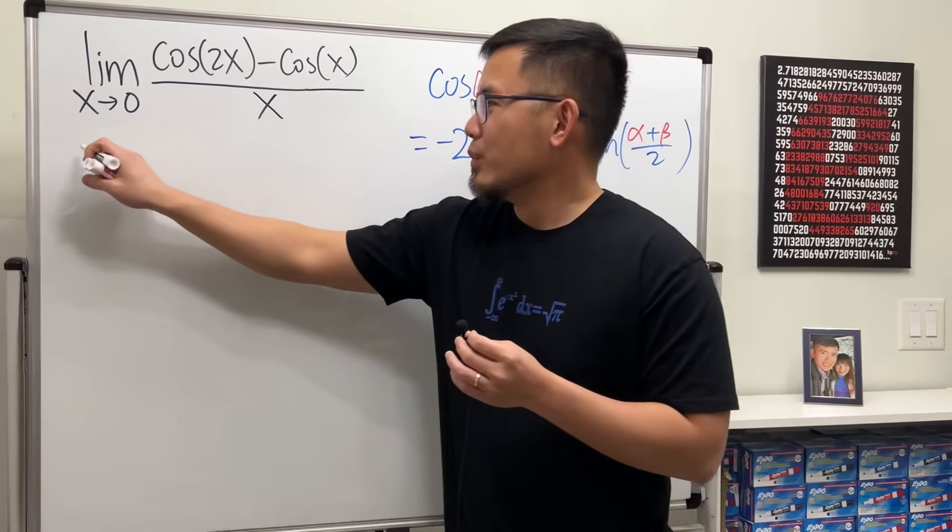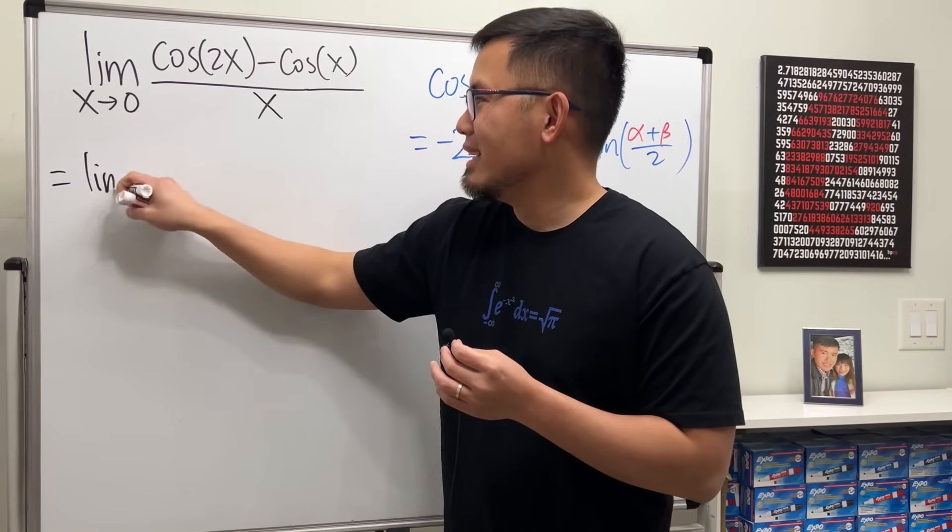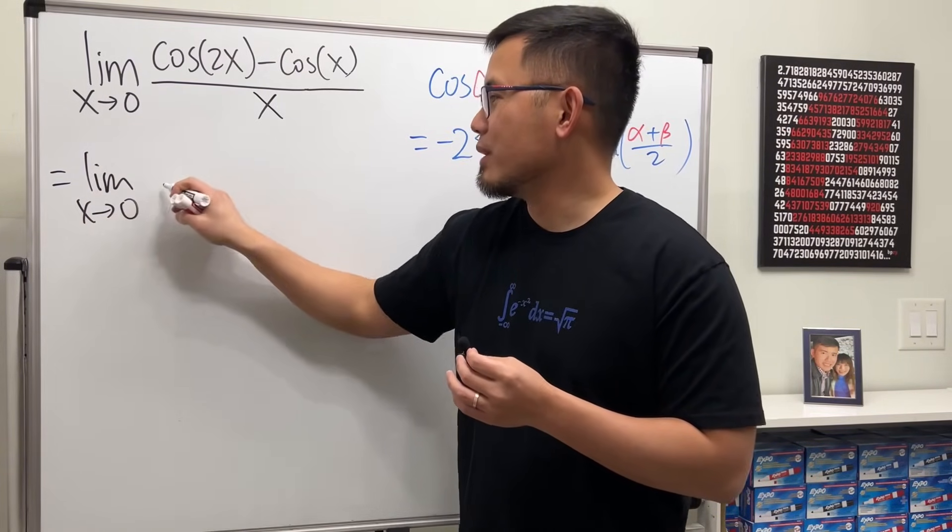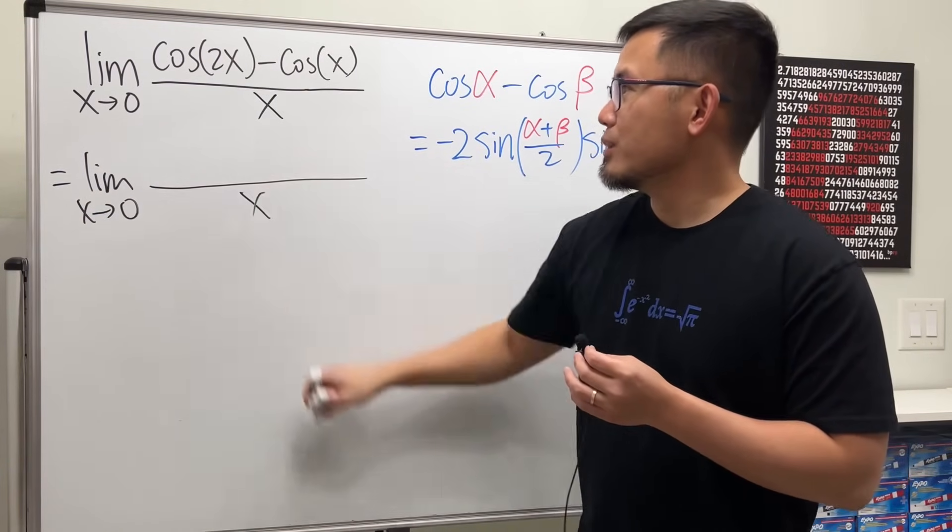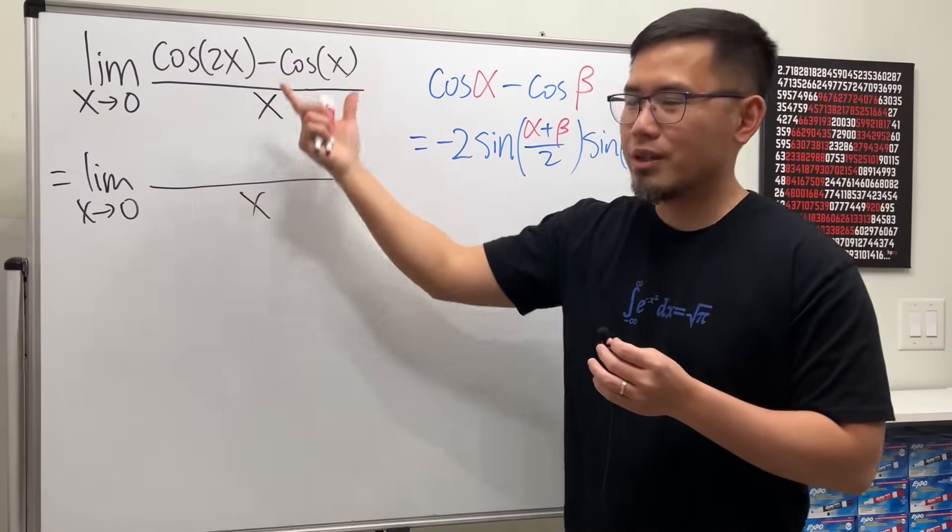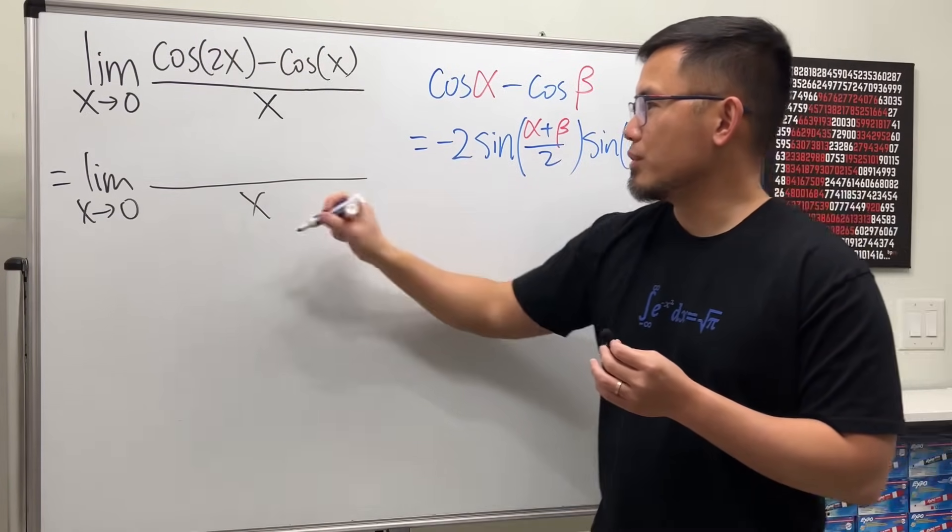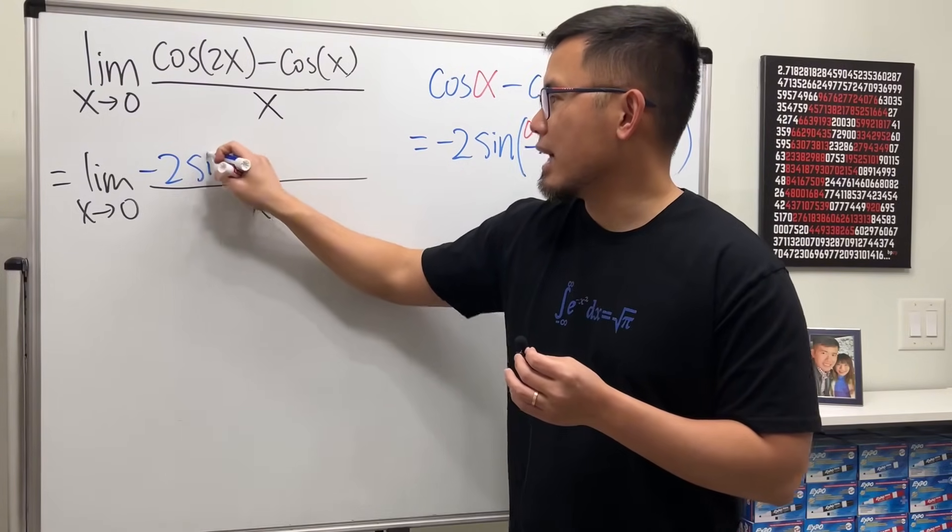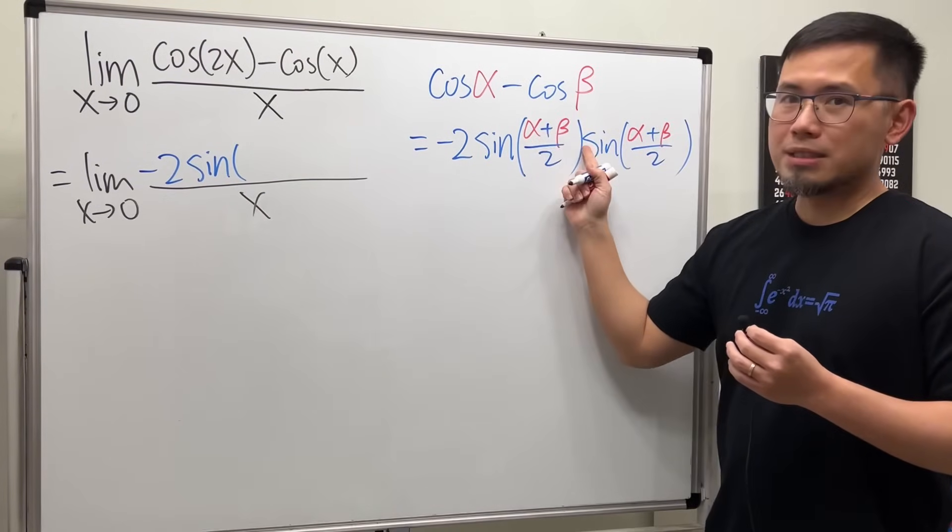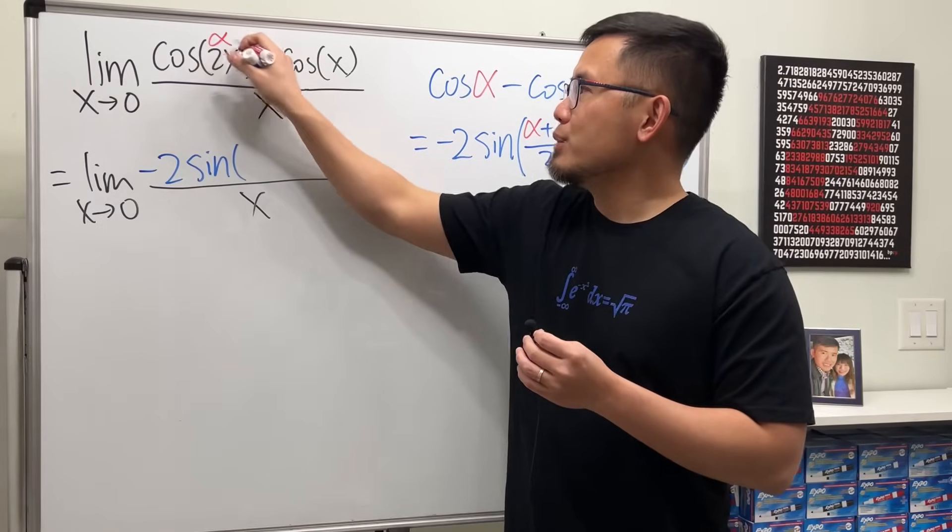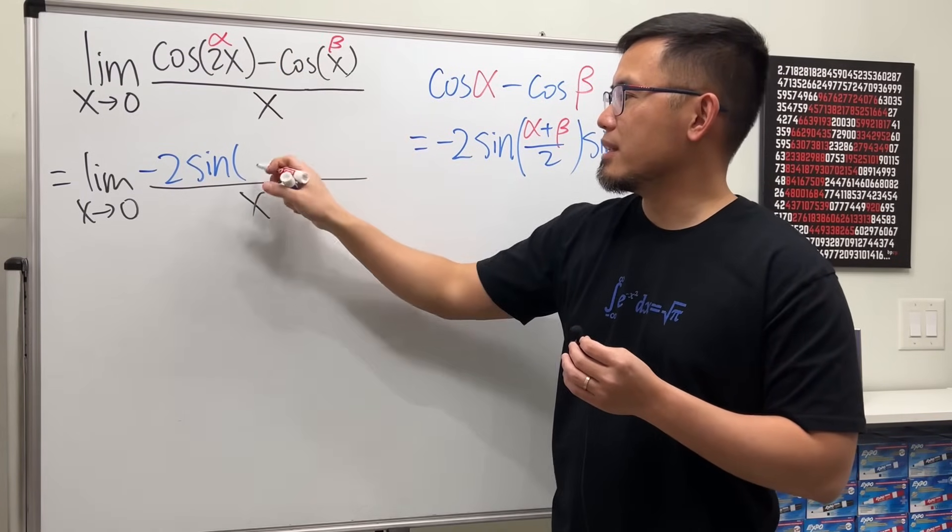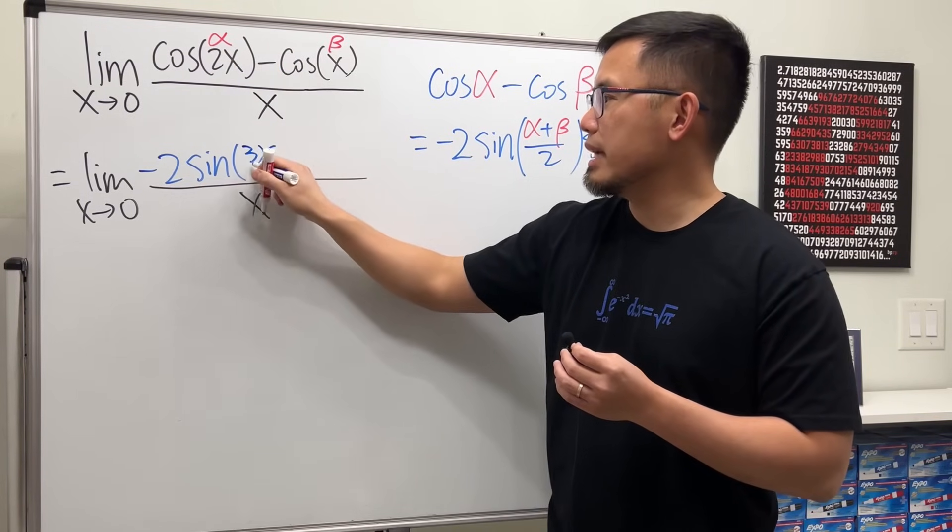And for this right here, we will first just get negative 2 times sine, and then we do alpha plus beta. Alpha is 2x, beta is x. Together we add them, we get 3x, 3x over 2.